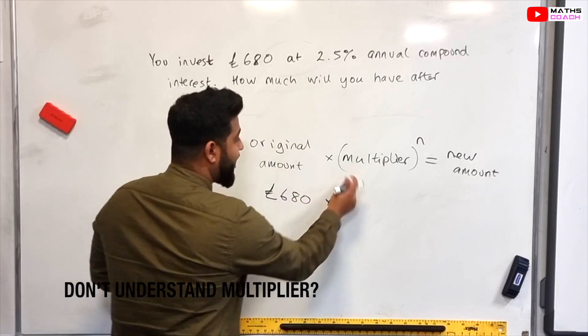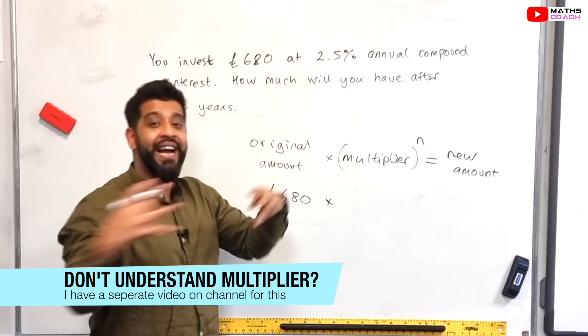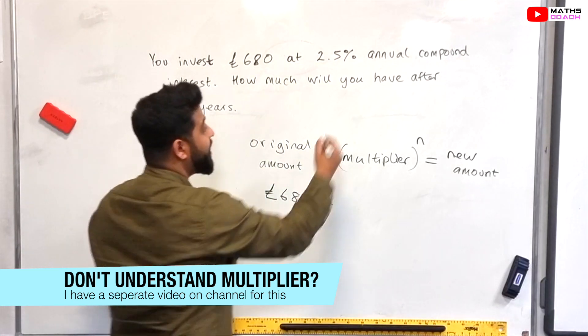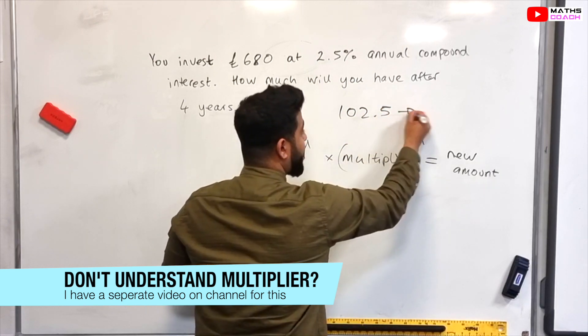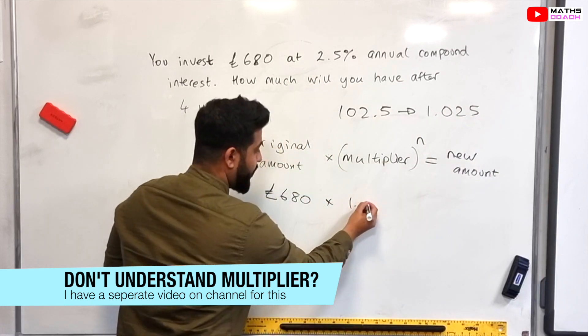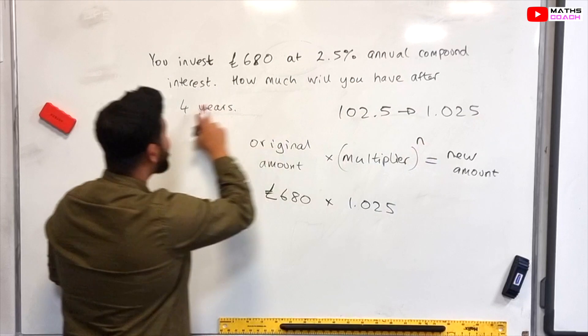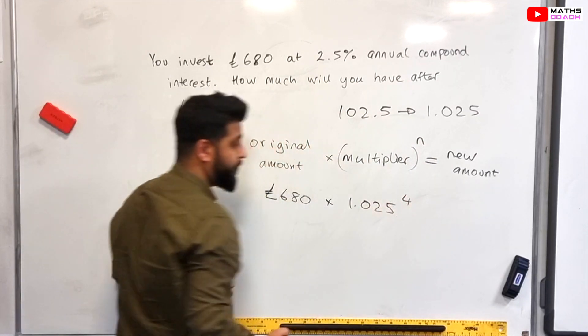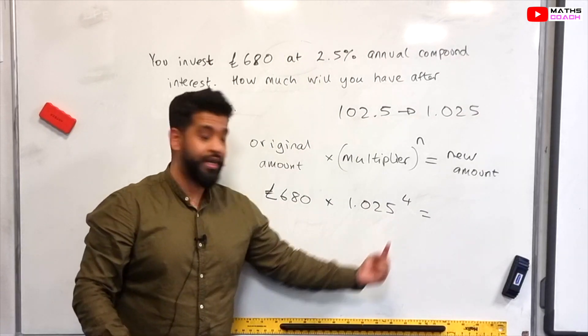Times by our multiplier. Now the multiplier is going to be 2.5% added to 100% which gives us 102.5%. So the multiplier would be 1.025. So 1.025 and to the power of n. Now n is 4 years. So to the power of 4.